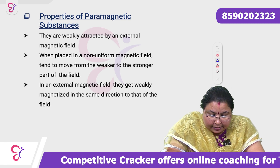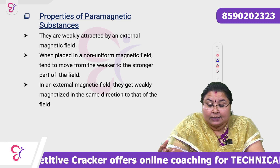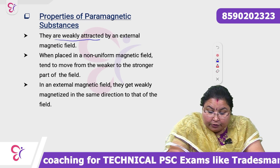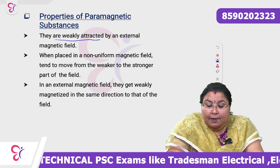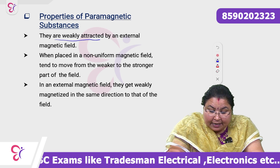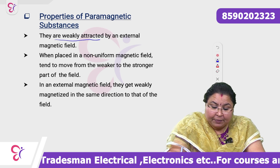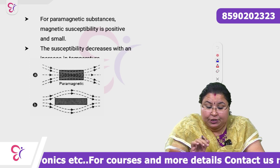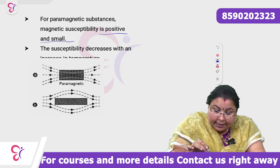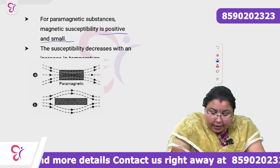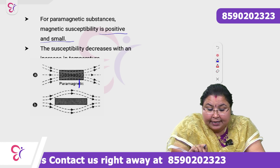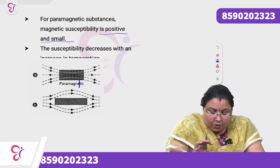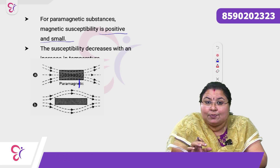Properties of paramagnetic substances: they are weakly attracted by an external magnetic field. When placed in a uniform magnetic field, they tend to move from the weaker to the stronger part of the field. In an external magnetic field, they get weakly magnetized in the same direction as the field. The magnetic susceptibility is positive and small, and it decreases with an increase in temperature — unlike diamagnetic substances where susceptibility is independent of temperature.